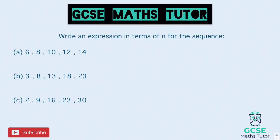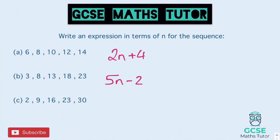Here are some for you to try — three sequences, write the nth term for each one. Pause the video now. The first one goes up in 2s: 2n, and taking away 2 from 6 gives positive 4, so 2n + 4. The next goes up in 5s: 5n, and taking away 5 from 3 gives −2, so 5n − 2. The last goes up in 7s: 7n, and taking away 7 from 2 gives −5, so 7n − 5.